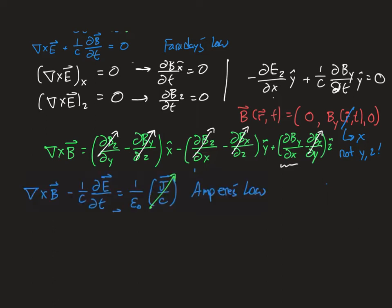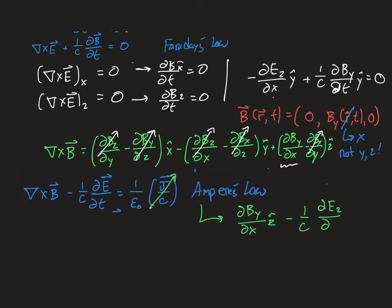Now referring back to Ampere's law and using the same technique we used to show the B field had only one component: we've now shown that the curl of the B field has only one component in the z-hat direction. That means the time derivative of the E field in the x and z directions is also zero, so we only have a time derivative in the z-hat direction.